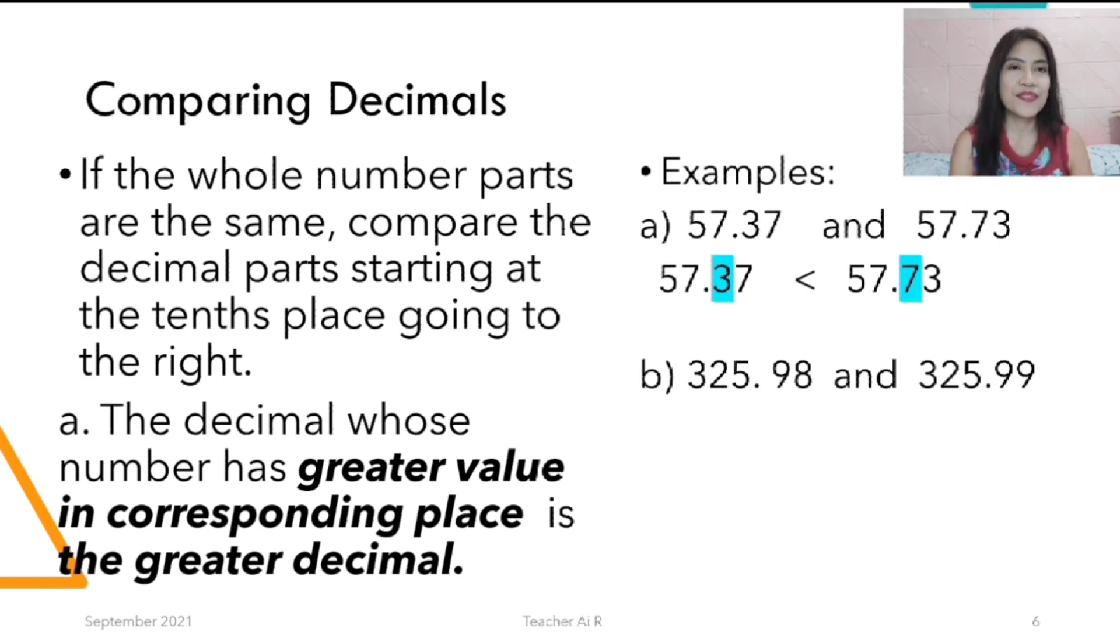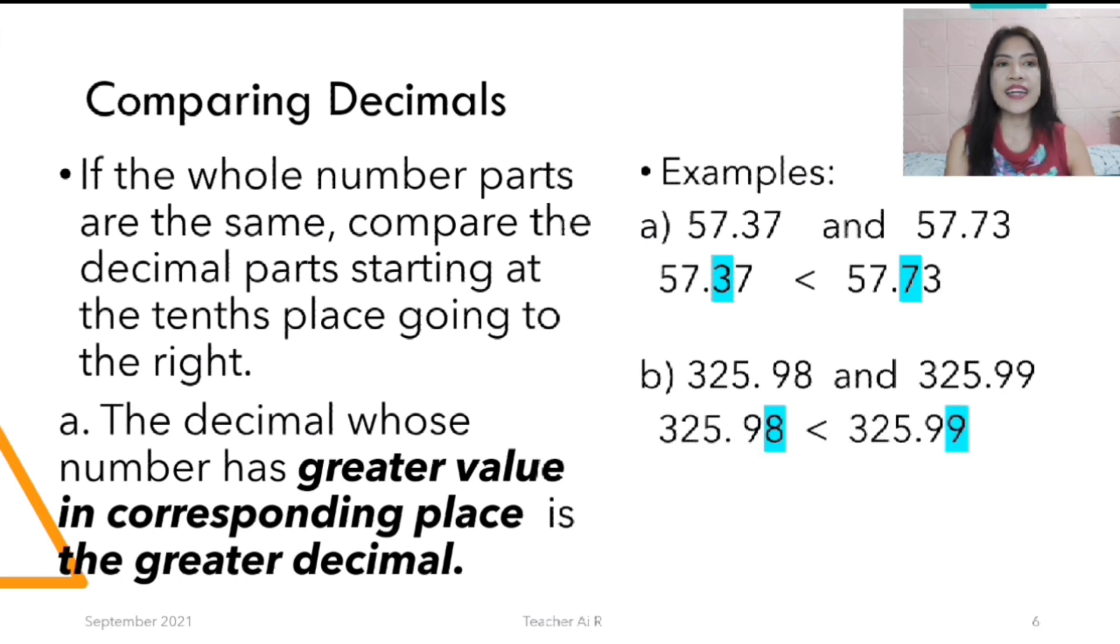Next one, we have the 325.98 and we also have 325.99. So how do we do it? We have to compare the whole numbers. The whole number is the same. Both are 325. So let's compare the 10th. The 10th is both 9. They are the same. So let's compare now the 100th. The 100th of the other one is 8 and the 100th of the other one is 9. Which is bigger? You're correct. The bigger one there is the 9. So when you have to put your symbols, 325.98 is less than 325.99.